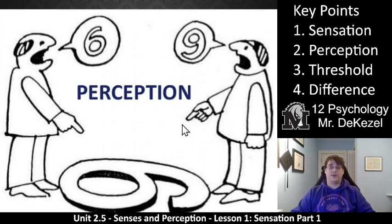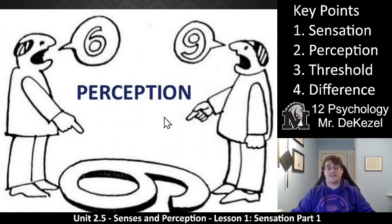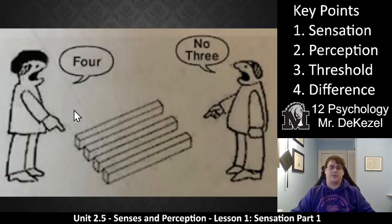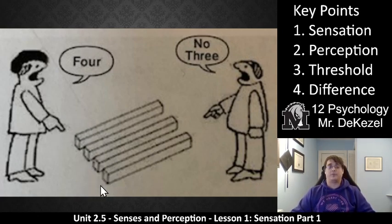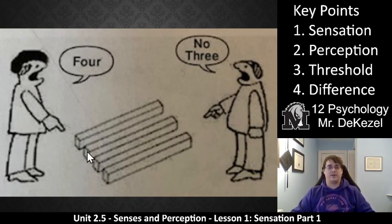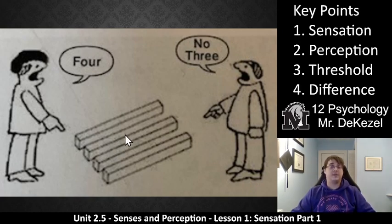Just like this example here: when you have two people standing on opposite sides of a shape on the ground, although the stimulus is the same, based on where they are they perceive it differently — one says it's a six, the other says it's a nine. Similarly, there's an image of blocks where one person counts four and another counts three, and both are correct depending on which side you view from. Even though the sensation and stimulus are the same for both, the perception — how they organize it to make it meaningful — is different, and that's true for all different people.